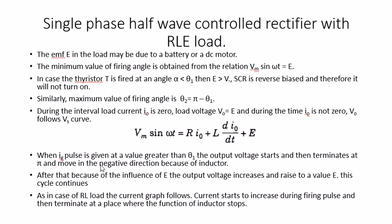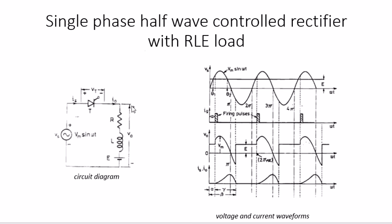These are the basic things and theories for R-L-E load. The formula involves Vm sin(ωt). Now we go to the wave diagram — here we have added the extra load: a battery, making it an R-L-E load with resistance, inductance, and a battery source. The firing pulses — theta one (minimum firing angle) and theta two (maximum firing angle) — are marked at π, 2π, 3π, and 4π values. The voltage output is a combination of R and L load, with an E difference visible.